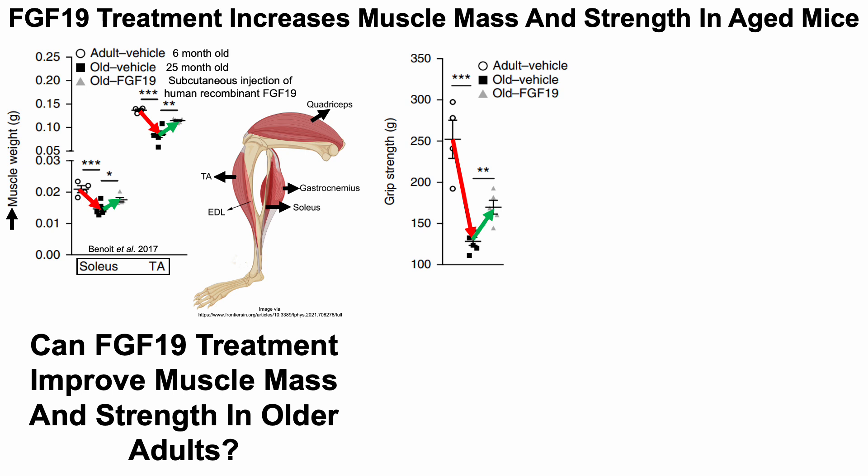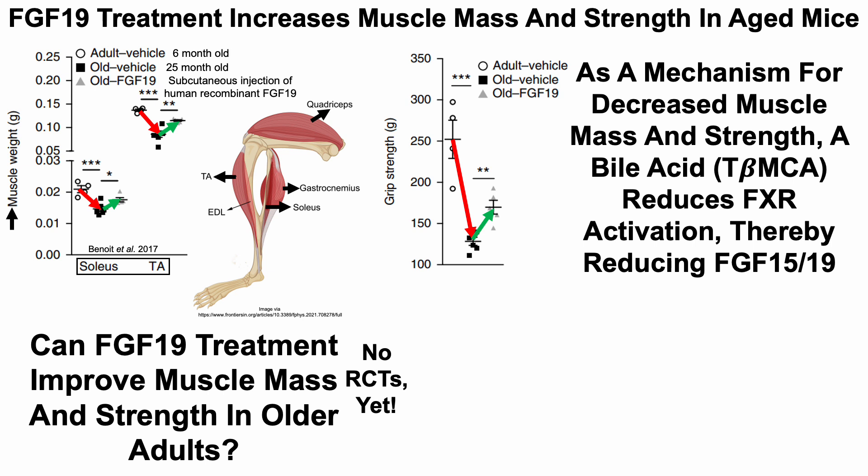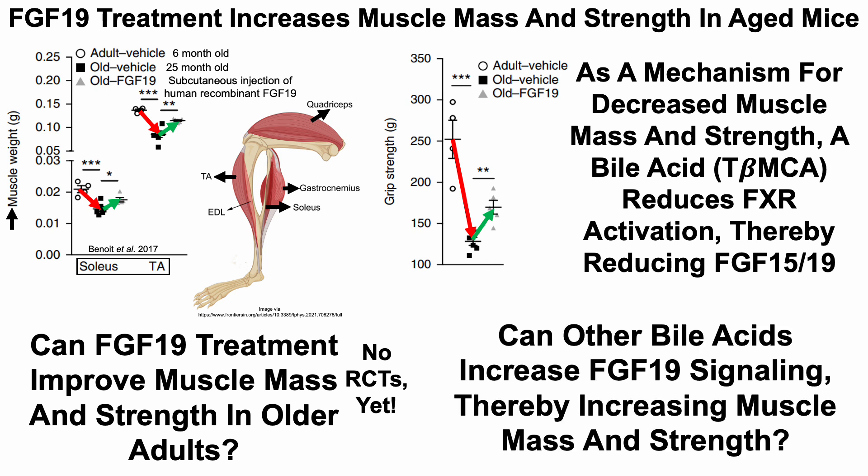This raises the obvious question: can FGF-19 treatment improve muscle mass and strength in older adults? Unfortunately, there aren't any RCTs that have evaluated that question yet. To recap the mechanism for decreased muscle mass and strength — at least in antibiotic-treated mice — the bile acid tauro-beta-MCA reduces FXR activation, thereby reducing FGF-15/19. This raises the further question: can other bile acids increase FGF-19 signaling? In contrast with data where reduced bile acids led to reductions in FXR activation and FGF-15/19 signaling, are there other bile acids that can increase FGF-19 signaling, thereby increasing muscle mass and strength, or even other pathways that bile acids can impact?